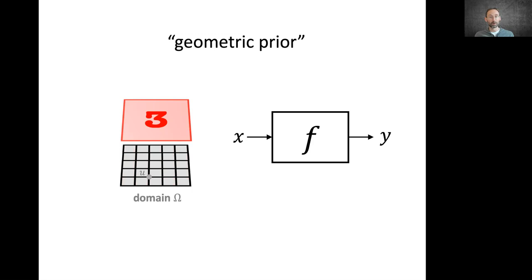In our example of image classification, the input image is not just a d-dimensional vector. It's a signal defined on some domain. In this case, it's a two dimensional grid. The structure of this domain is captured by a symmetry group.